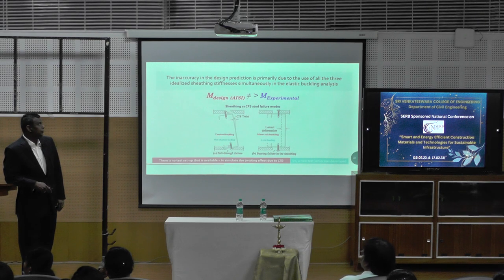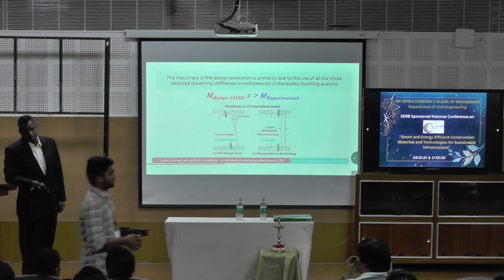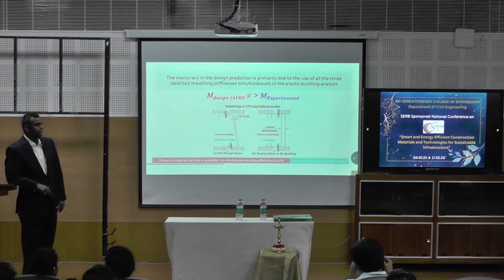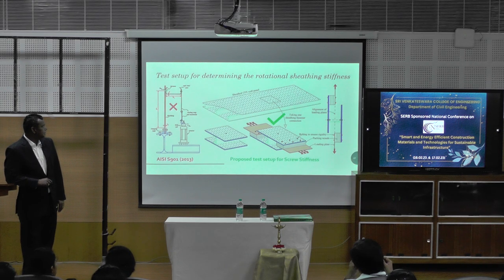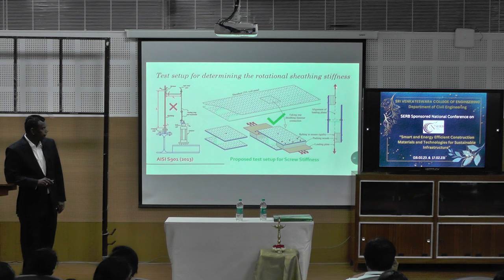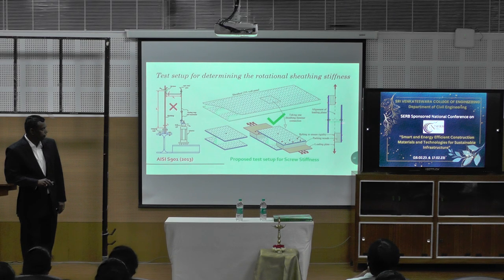We don't want to stop there — we wanted to formulate a design as well. You cannot keep on doing large-scale experiments for everything, so we need a new test setup. The previously given AISI test setup was wrong. So what we did is take a small isolated portion of the wall panel and apply the load to produce the twisting effect. You see this is the C-channel — when you pull a load like this, there is a tendency for it to twist because we are invoking the correct deformation mode.